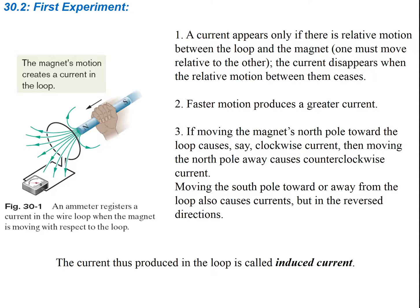If the magnet's north pole toward the loop causes a clockwise current, then moving the north pole away causes a counterclockwise current. Moving the south pole toward or away from the loop also causes currents, but in the reverse directions. The current produced in the loop is called induced current.